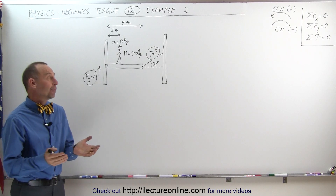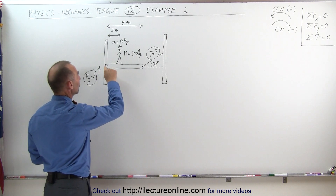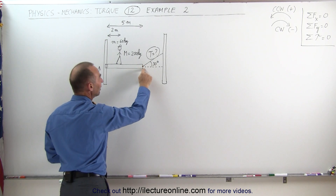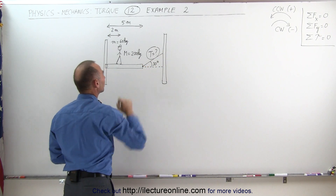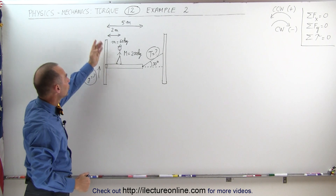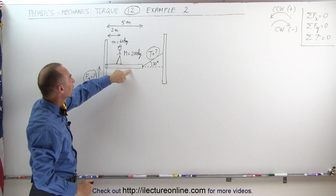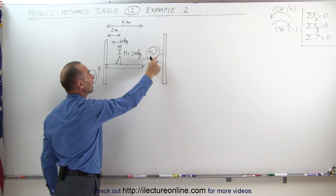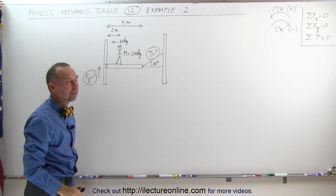Welcome to Electron Line. Our next example has two posts. Between the two posts there is a beam connected to a hinge on the left side and a rope or cable on the right side, suspended from the post. It makes an angle of 30 degrees relative to the horizontal. The mass of the person standing on the beam two meters from the left post is 60 kilograms, the mass of the beam is 200 kilograms, and the length of the beam is 5 meters. We need to find the tension in the cable and the vertical force on the hinge on the left side.